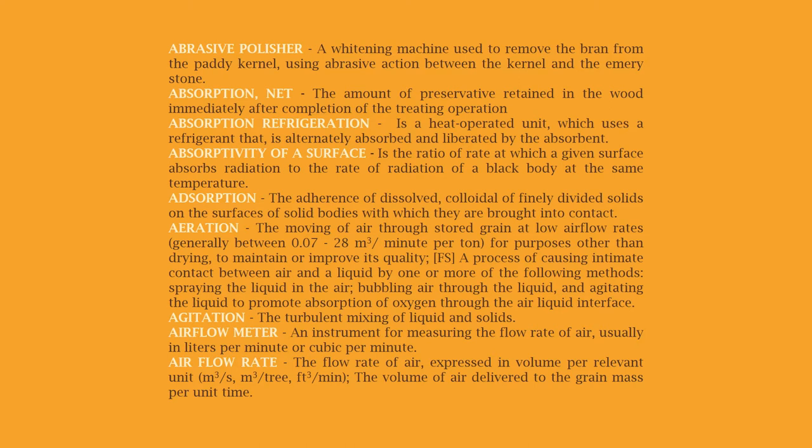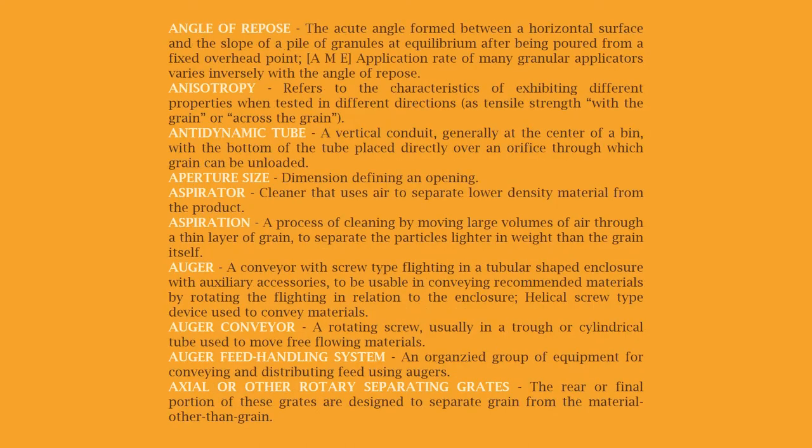Agitation: the turbulent mixing of liquid and solids. Airflow meter: an instrument for measuring the flow rate of air, usually in liters per minute or cubic meters per minute. Airflow rate: the flow rate of air expressed in volume per relevant unit — cubic meter per second, cubic meter per tree, cubic foot per minute — the volume of air delivered to the grain mass per unit time.